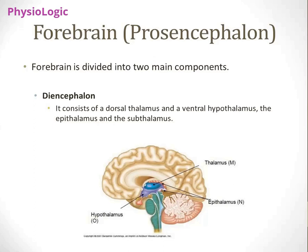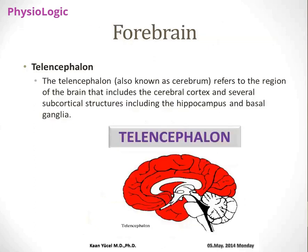The outermost structures of the forebrain make up the telencephalon. You can see the red shaded area — that is your telencephalon. The telencephalon is also known as the cerebrum. It refers to the region of the brain that includes the cerebral cortex and several subcortical structures, including the hippocampus and basal ganglia.